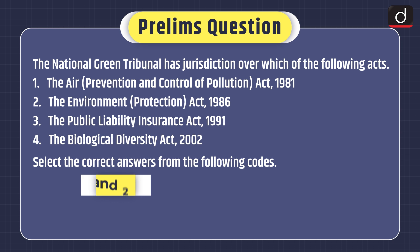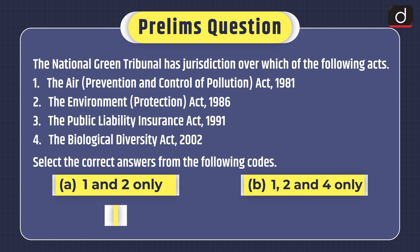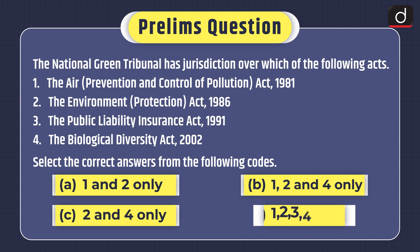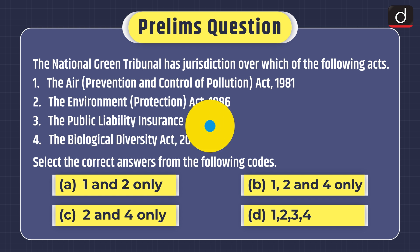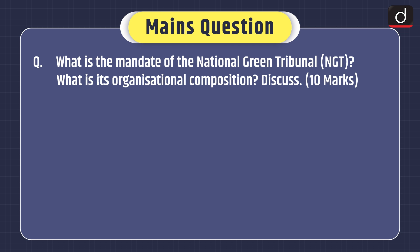Now it's time for the practice questions. Prelims-based question: The National Green Tribunal has jurisdiction over which of the following acts? 1. The Air Prevention and Control of Pollution Act 1981, 2. The Environment Protection Act 1986, 3. The Public Liability Insurance Act 1991, 4. The Biological Diversity Act 2002. Select the correct answers: (a) 1 and 2 only, (b) 1, 2 and 4 only, (c) 2 and 4 only, or (d) 1, 2, 3 and 4. Mains question: What is the mandate of the National Green Tribunal, i.e. NGT? What is its organizational composition? Discuss.